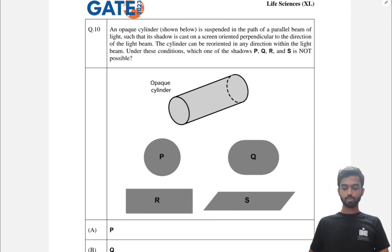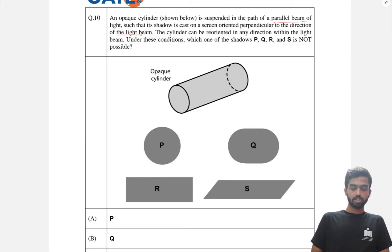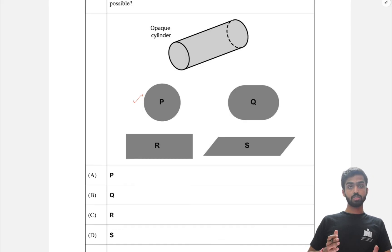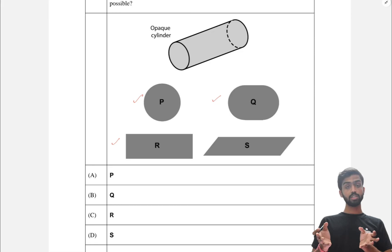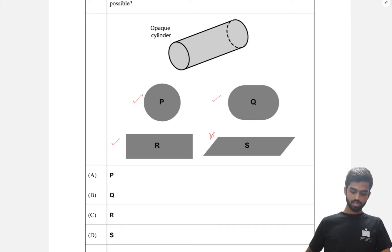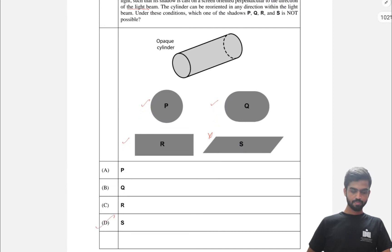The final question: an opaque cylinder is suspended in the path of a parallel beam of light, and a shadow is cast on a screen perpendicular to the beam. Option P is true when the cylinder is parallel to the beam. Option R is true when the cylinder is perpendicular to the beam. Option Q could result from orienting the cylinder at a slanting 45-degree angle, giving a curved edge. Option S cannot be true with a parallel light source — it would only occur if the source were tilted. So the answer is S.